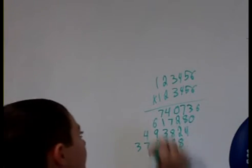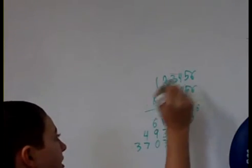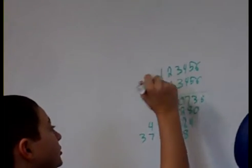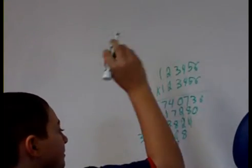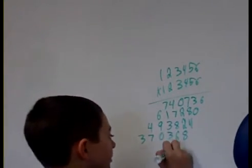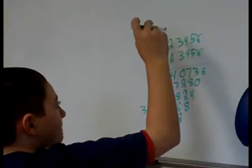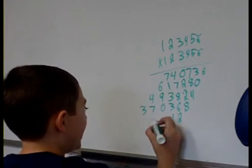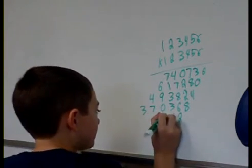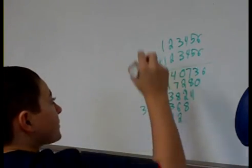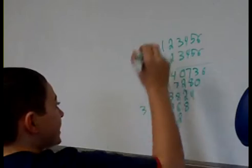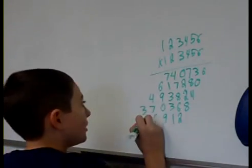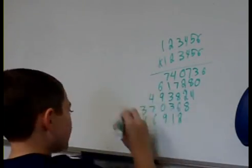And then, we move on to 2. And then, 2 times 6 is 12. And then, 2 times 5 is 10, plus the 1, which is 11. 2 times 4 is 8, plus the 1 is 9. And then, 2 times 3 is 6. And then, 2 times 2 is 4. And then, 2 times 1 is 2.